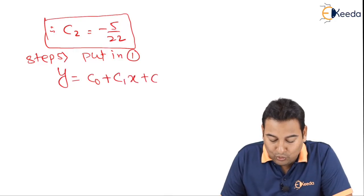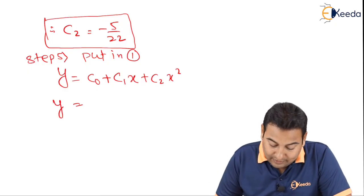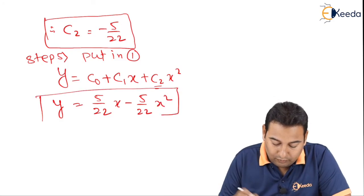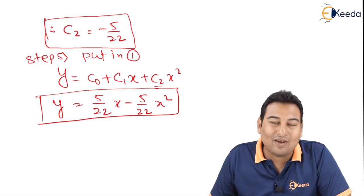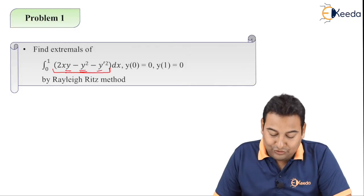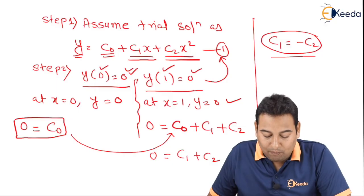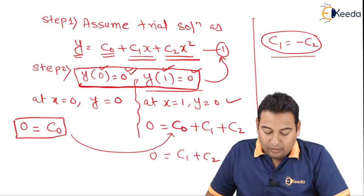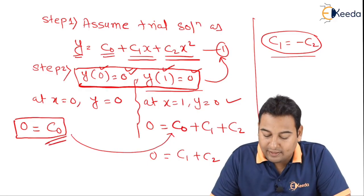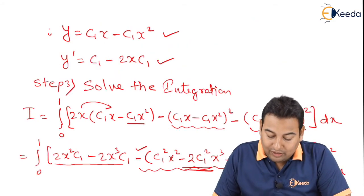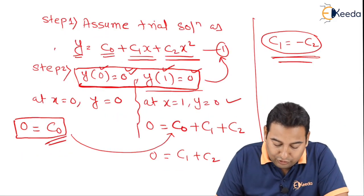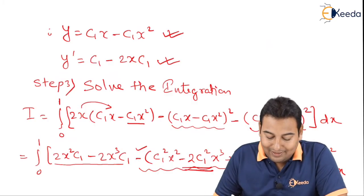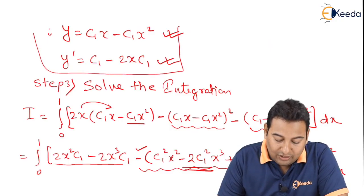Step 5: substitute in equation 1. y = c0 + c1x + c2x² = 0 + (5/22)x − (5/22)x². This is the required solution. Let's revise: Step 1 assumed the trial solution. Step 2 used initial conditions to find c0 = 0 and c1 = −c2. We substituted to get y = c1x − c1x² and found y'.